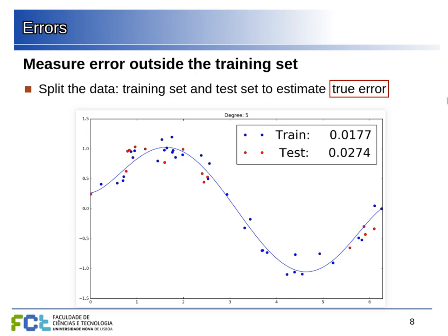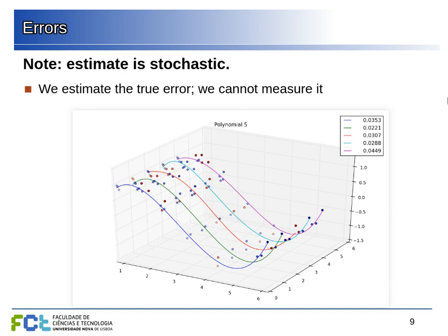The idea is to use the training set — the blue points — to fit the model and adjust the parameters, then measure the error outside the training set to estimate the true error. The test error is measured on points we did not use to adjust anything, so we can use it to estimate the true error. However, the true error is the average over all the universe of points and we only have a sample.